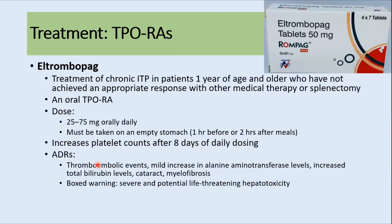Eltrombopag is indicated for treatment of chronic ITP in patients one year of age or older who have not achieved an appropriate response with other medical therapy or splenectomy. It is an oral agent given at 25 to 75 mg orally daily and must be taken on an empty stomach. Platelets start to increase after 8 days of daily dosing. Side effects include thromboembolic events, increased bilirubin levels, cataract, and myelofibrosis.